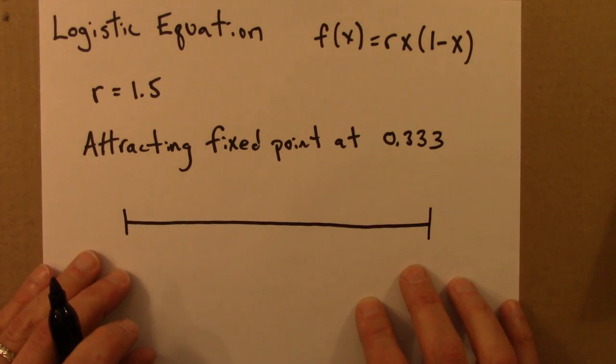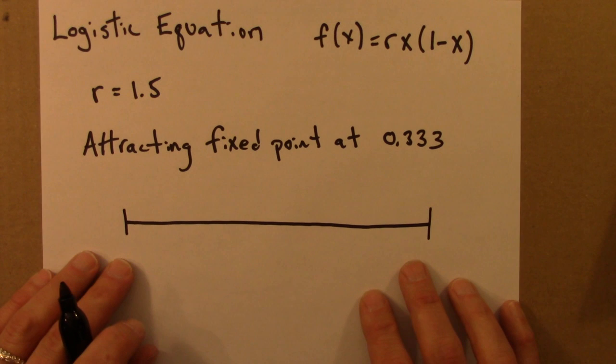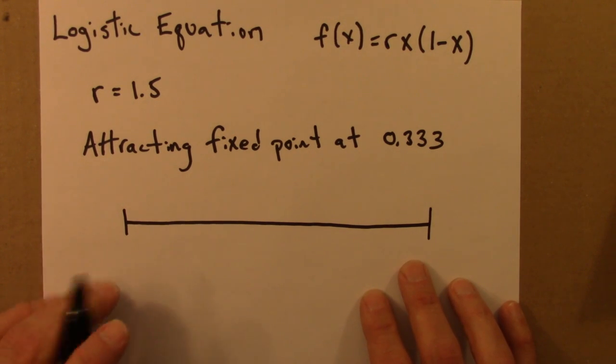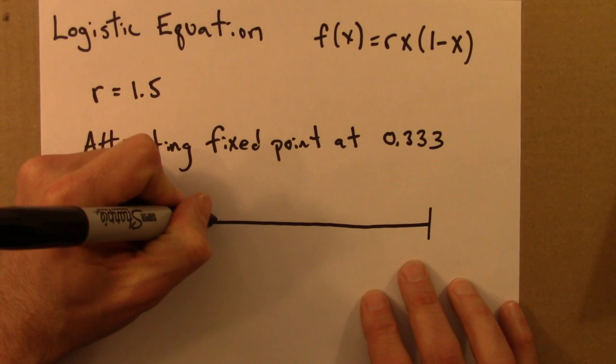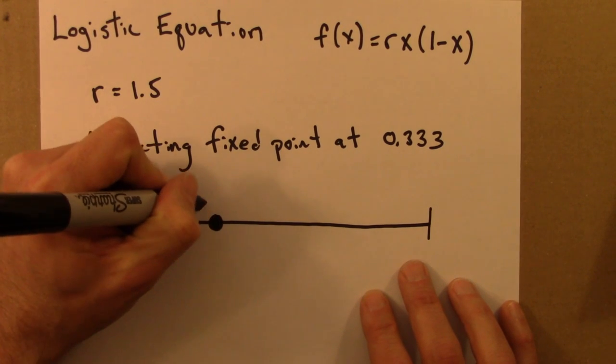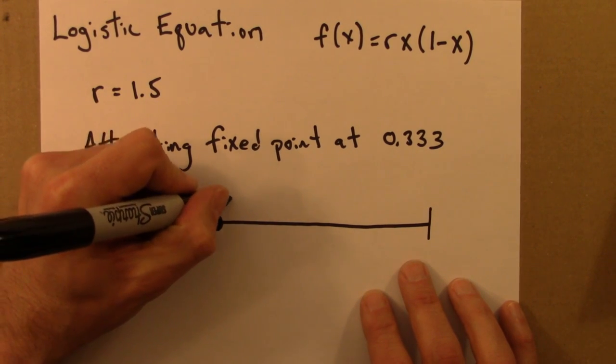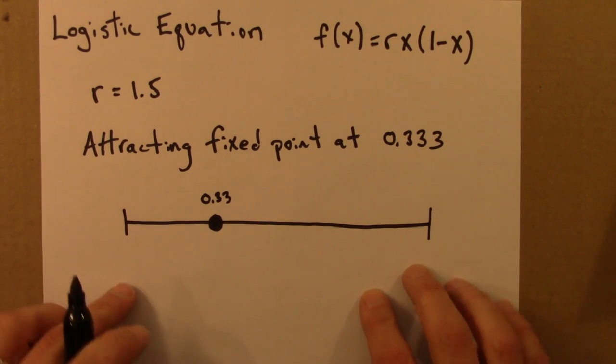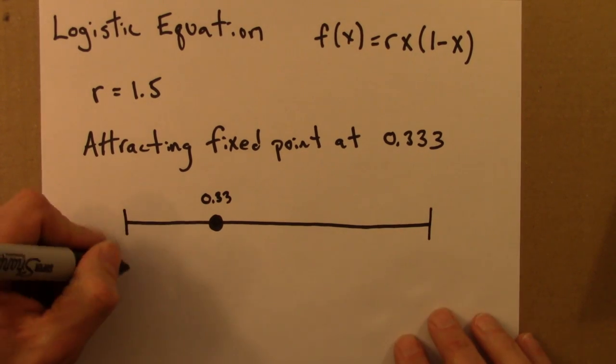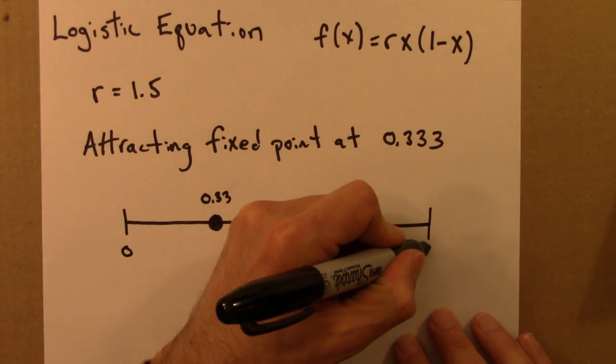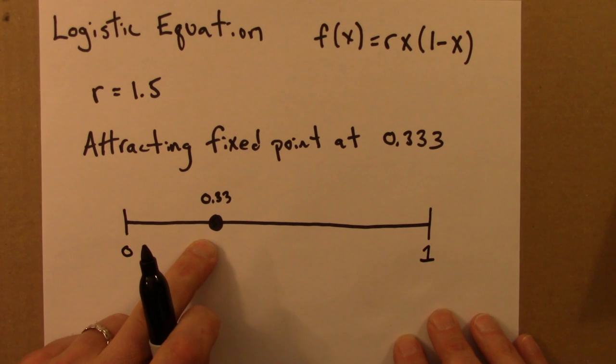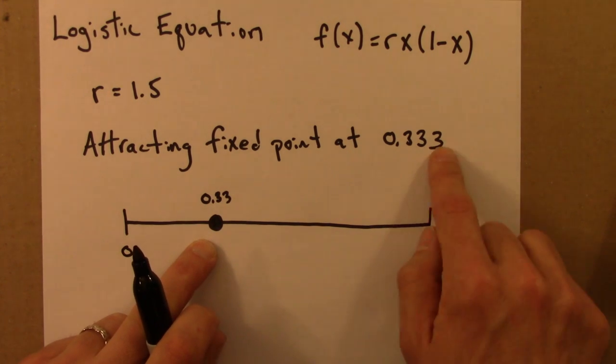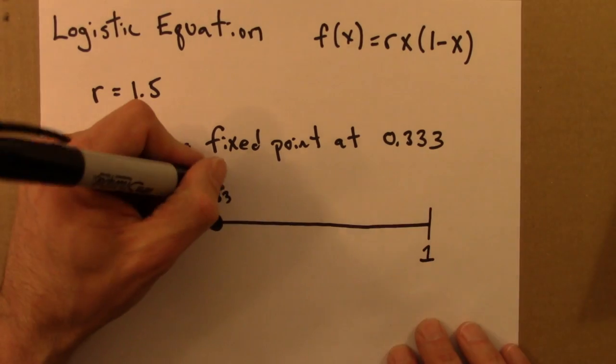And I'm going to summarize this with something that's very similar to a phase line, but not quite identical. It's something I call a final state diagram. And in a final state diagram, one just draws a dot for the final state or final states. So here, this is supposed to go from 0 to 1. And then, there's just a single dot at 0.33 or 0.3333 and so on.